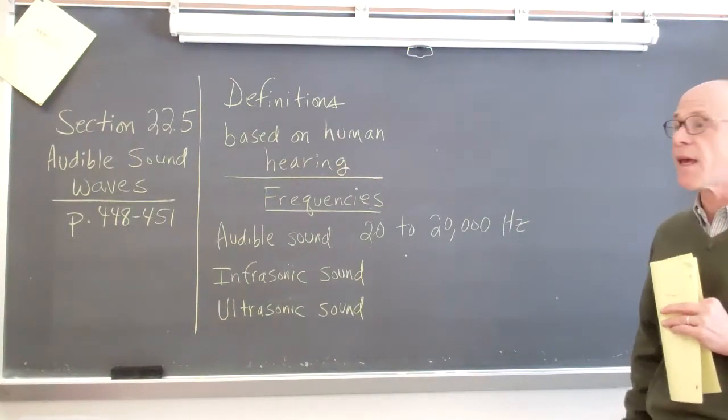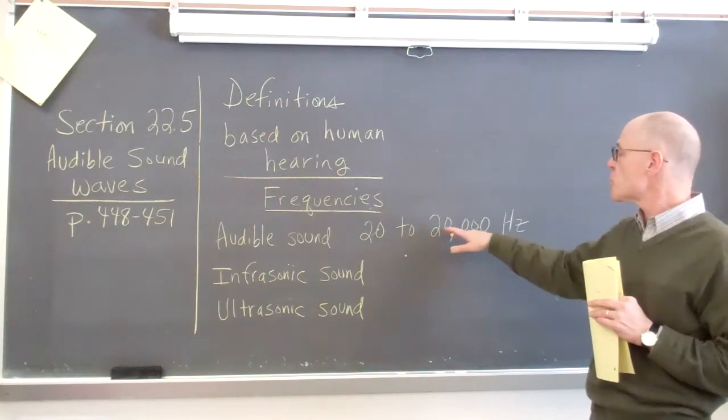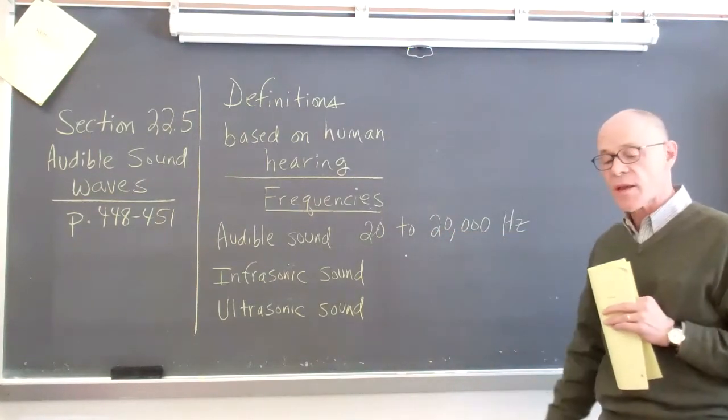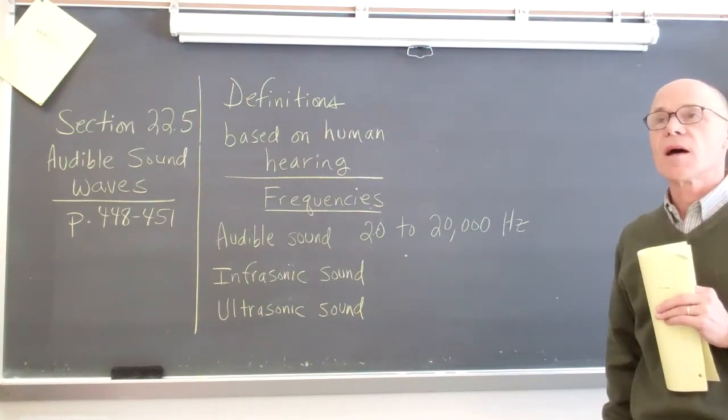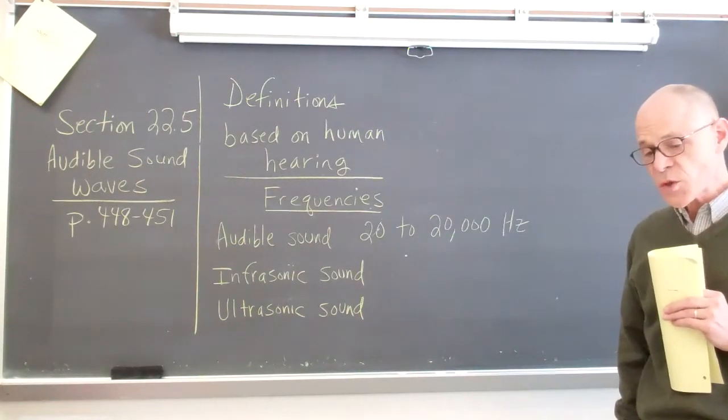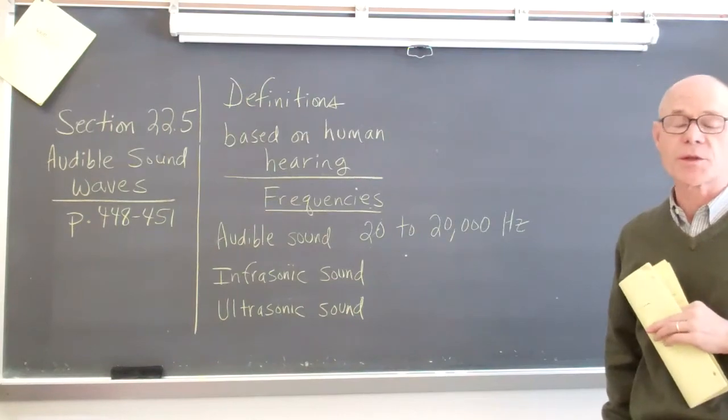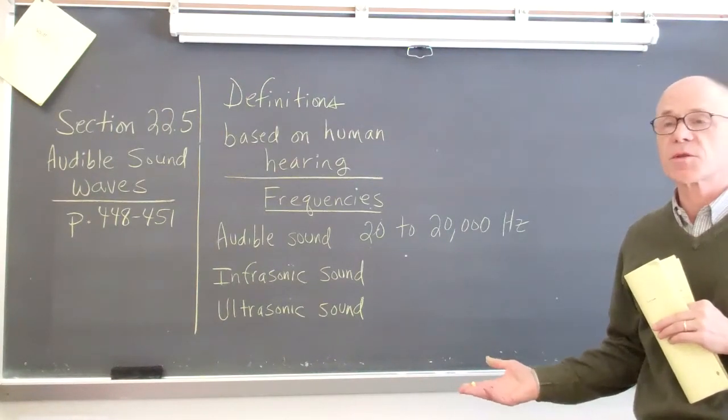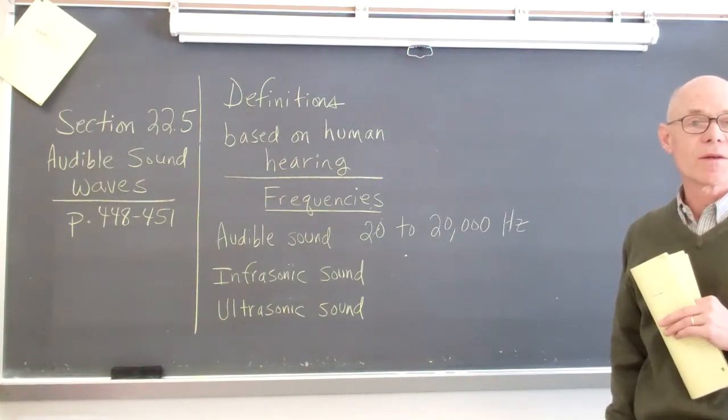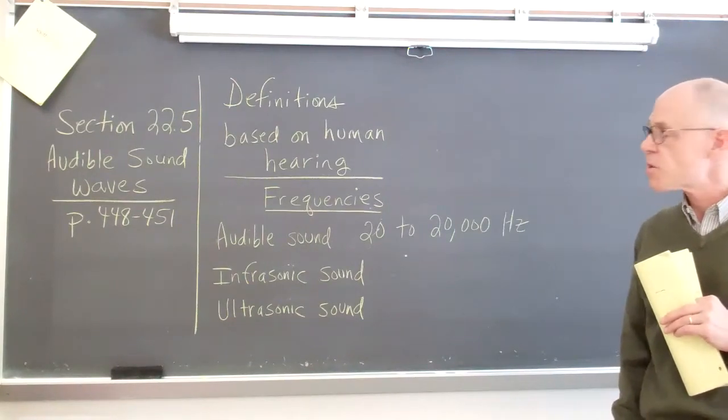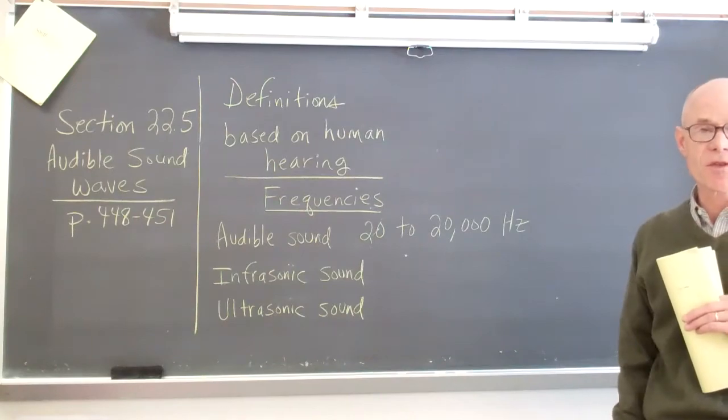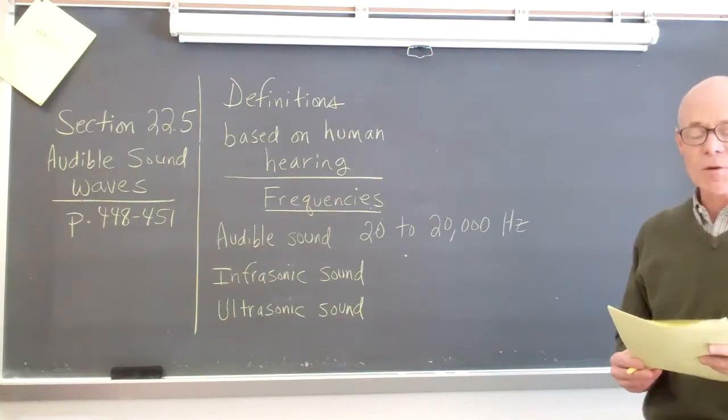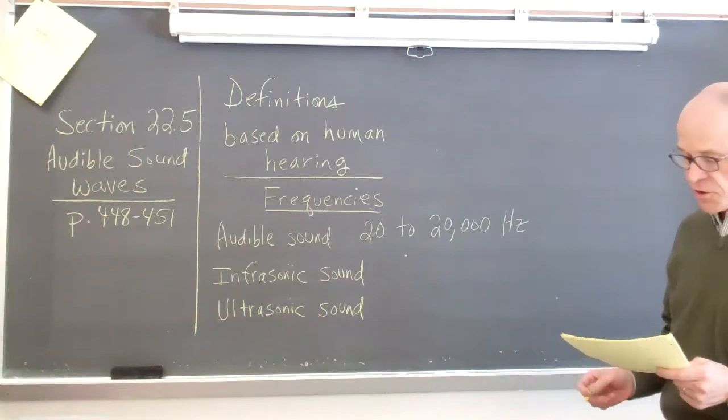Now, a lot of young people can hear close to and near 20,000 hertz. As you get older, you lose some of that ability. It's not uncommon for people as they get older to maybe only be able to hear up to 8 or 10 or 12,000 hertz. But generally, a low of 20 up to 20,000 hertz is considered audible sound for humans.